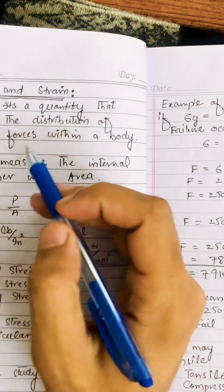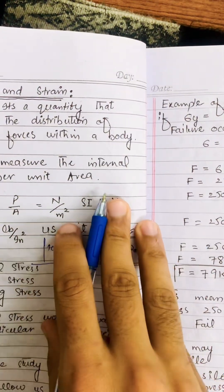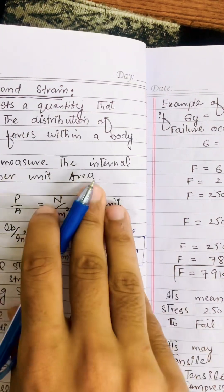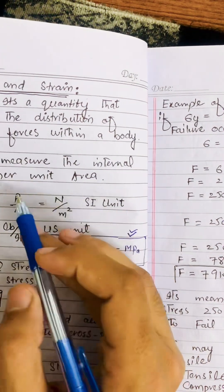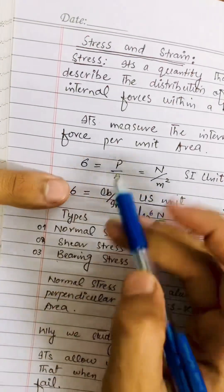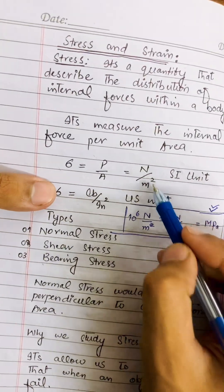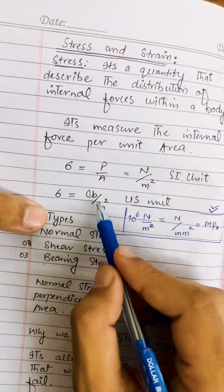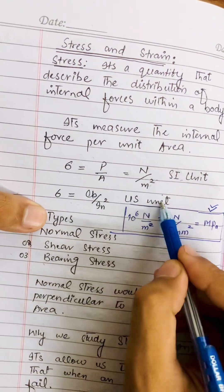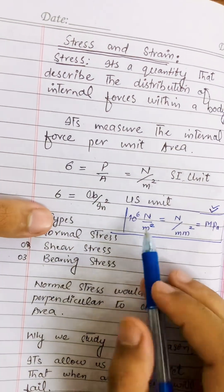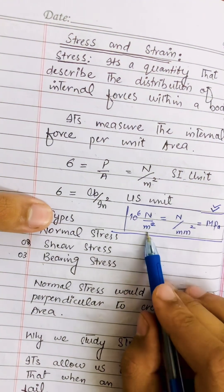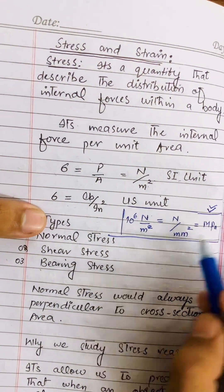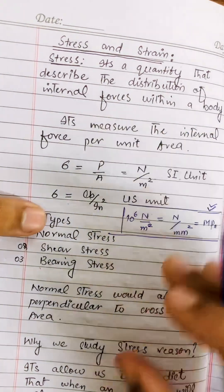Stress is a quantity that describes the distribution of internal forces within a body — force per unit area. Its SI unit is newton per meter square (N/m²). It can also be expressed as pound per inch square (US unit), or as 10⁶ N/m², or N/mm², which equals megapascal (MPa). These are all units of stress.